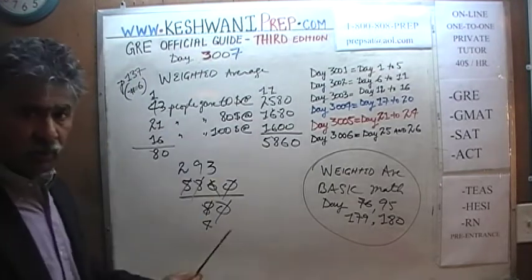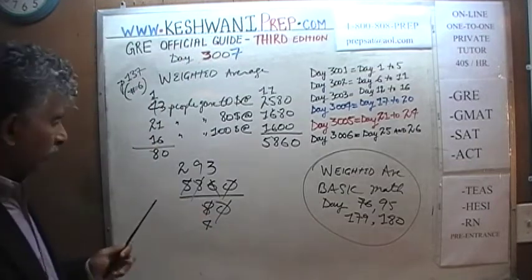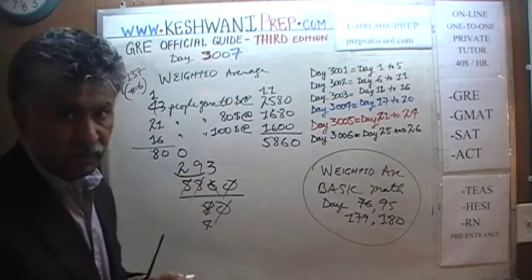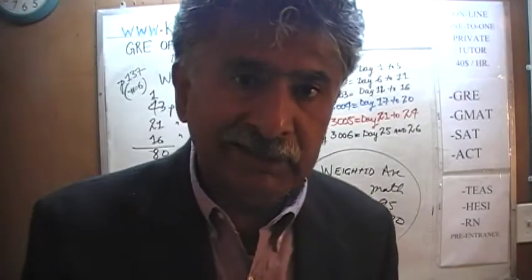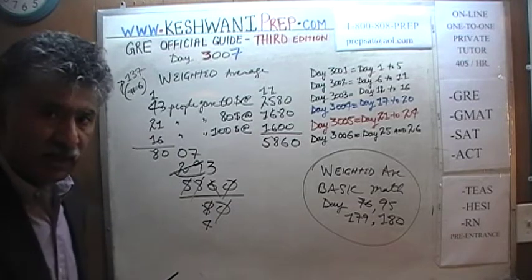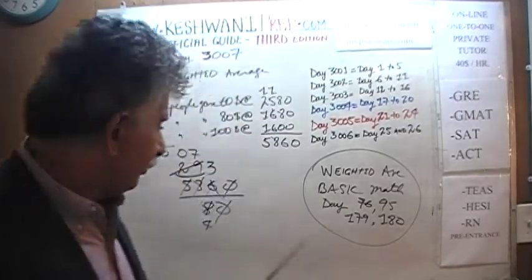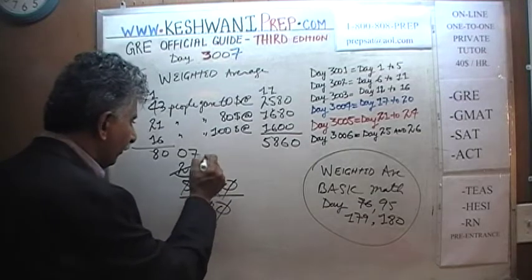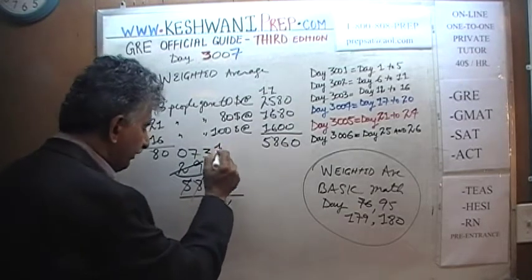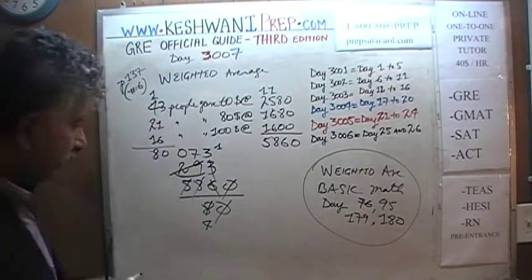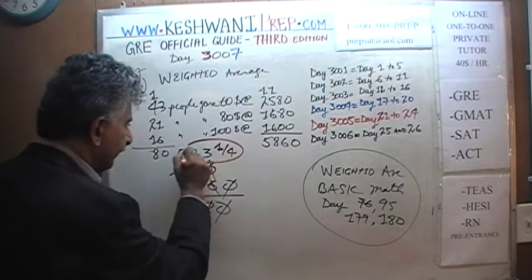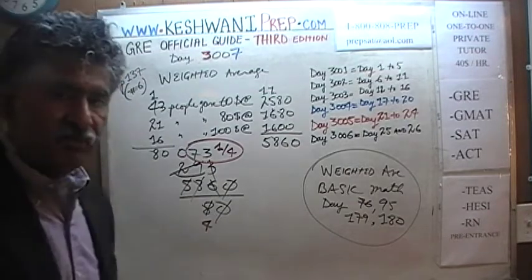Stay with me. How many 4s does 2 have? 2 has no 4s — the 2 goes and joins the 9 and becomes 29. 29 has 7 fours; 7 times 4 is 28. After we take away 28 from 29, we have a remainder of 1. That 1 goes and joins the 3 and becomes 13. 13 has 3 fours; 3 times 4 is 12. After we take away 12 from 13, remainder of 1, which must be divided by 4. The answer is $73 and a quarter — $73.25.